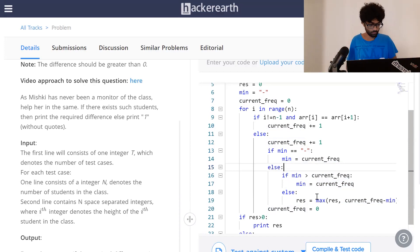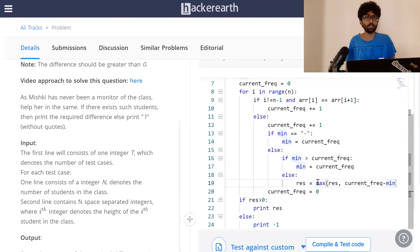As long as that's not true, we update our result. The result is the greatest possible difference between the current frequency and the minimum frequency. We then reset current frequency to 0.